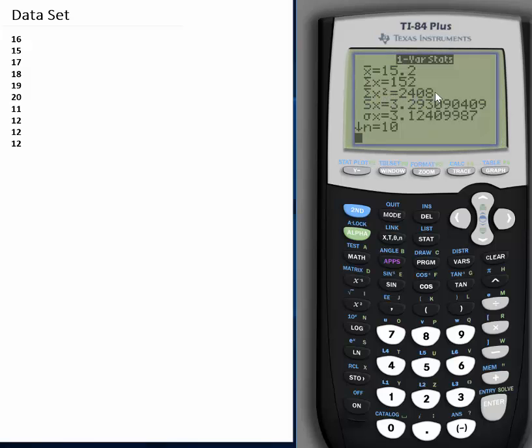Now s and sigma, these are the standard deviation. If your data set is a sample data set, then your answer for the standard deviation is s. If it is a population data set, then your answer is sigma.